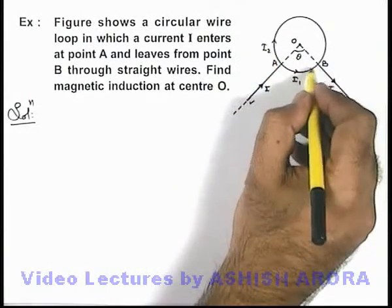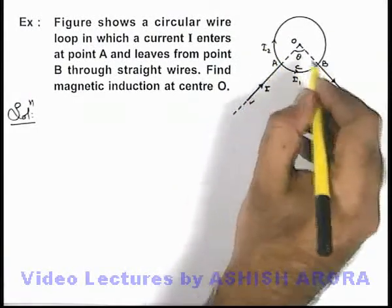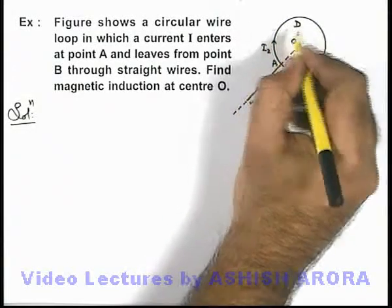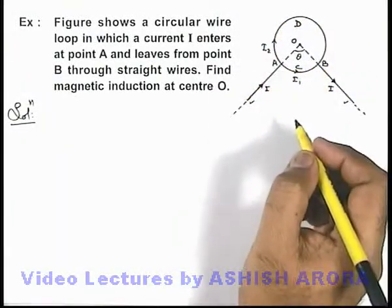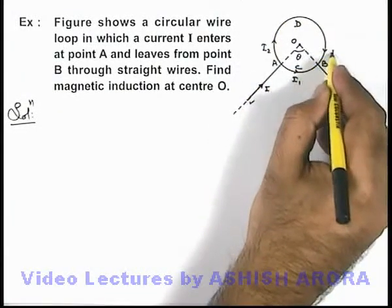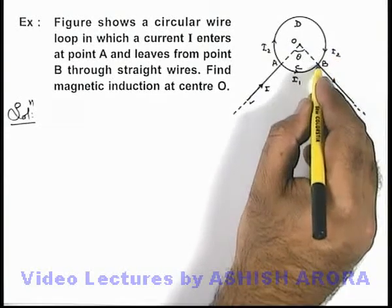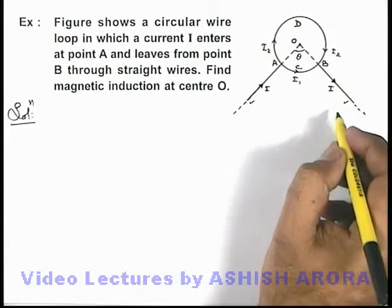Say this i1 current is flowing in the section A C B and i2 current is flowing in the section A D B of the circular wire and finally these currents combine at point B and leaves the circle through the straight wire.